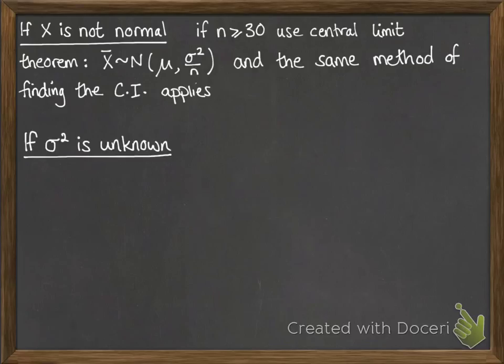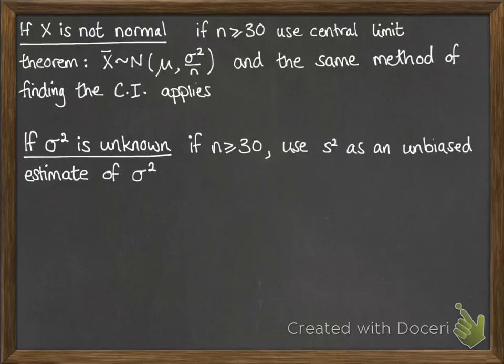We might get the situation where σ² is not known. You've just seen that we need to know σ to work out our confidence interval. In that situation, again, if n is bigger than 30, then we can use s² as an unbiased estimate for σ². The unbiased estimate is what you practiced in the previous section.